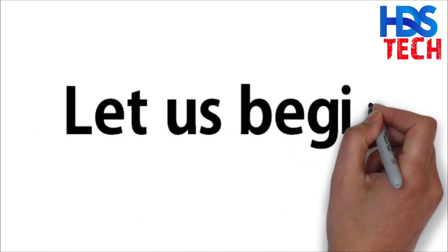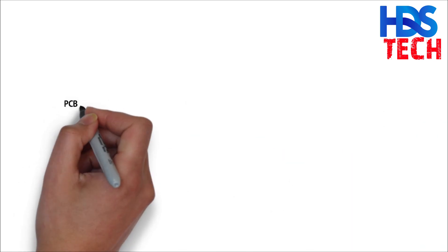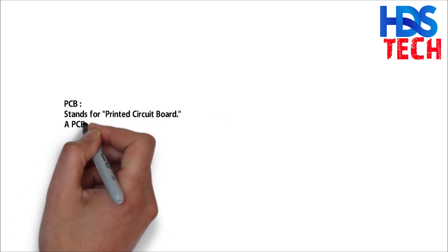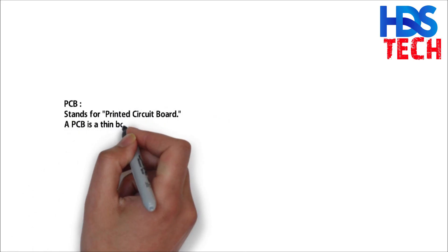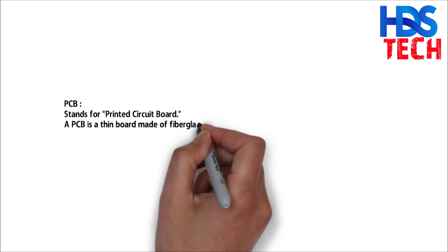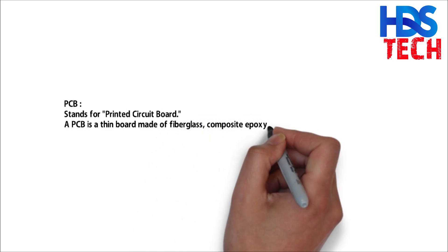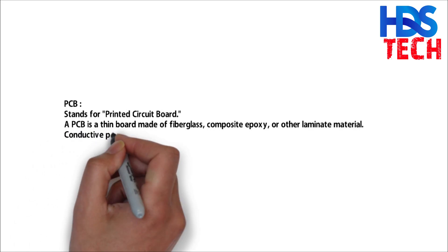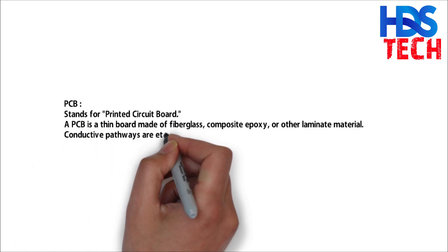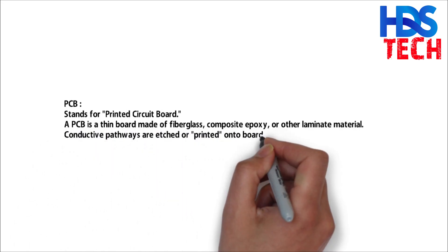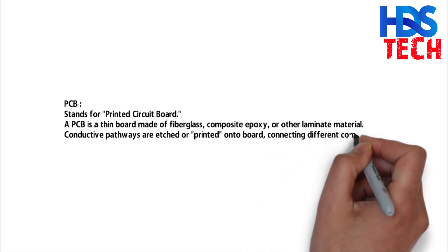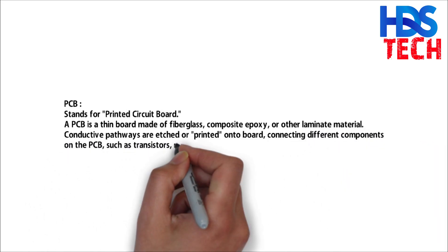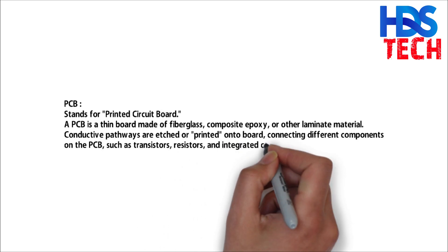PCB stands for printed circuit board. A PCB is a thin board made of fiberglass, composite epoxy, or other laminate material. Conductive pathways are etched or printed onto the board, connecting different components on the PCB such as transistors, resistors, or integrated circuits.